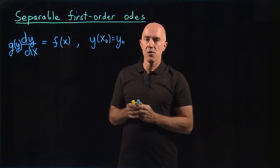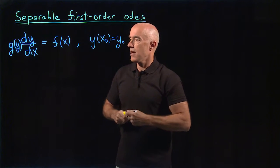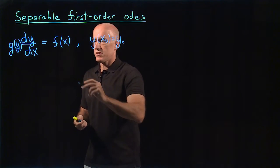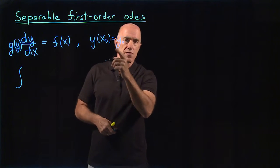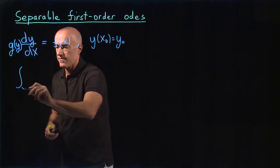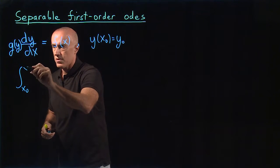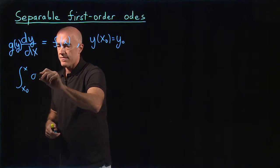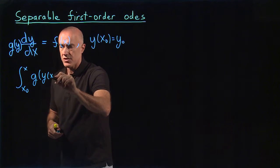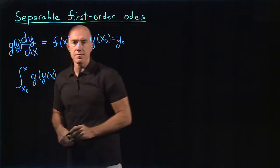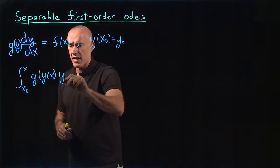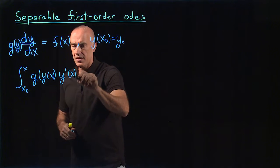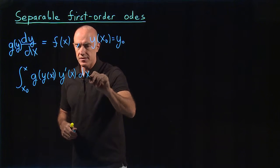A separable equation can be integrated. So we integrate this equation. We integrate from the initial value of x, so we integrate from x naught to x. And then we have g of y, which is a function of x, times dy/dx. dy/dx is y prime of x, and then we're integrating this dx.